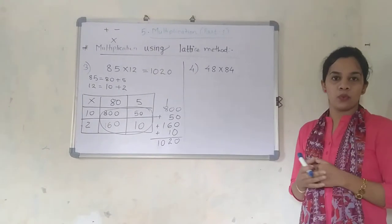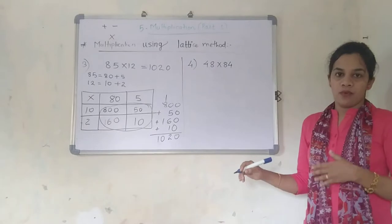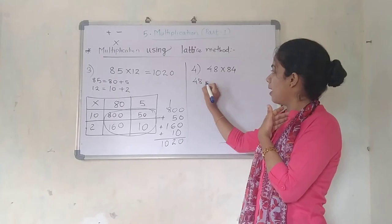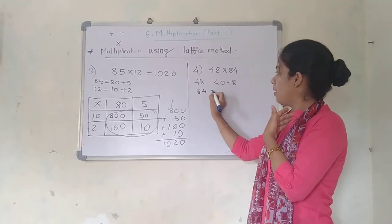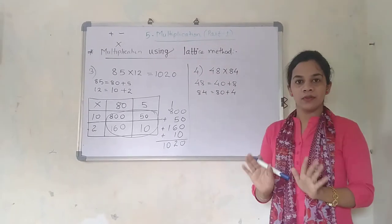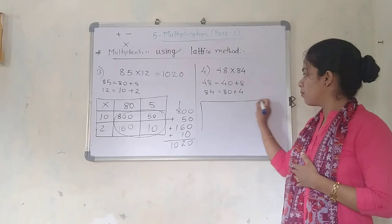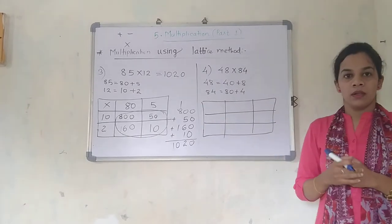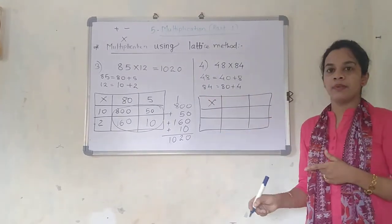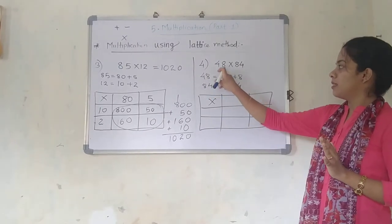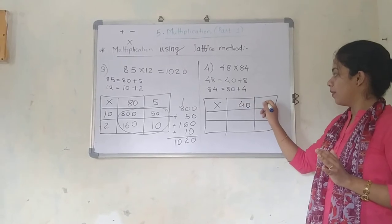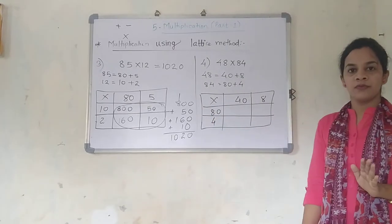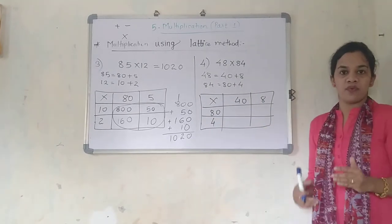Now focus on the next question: 48 into 84. I am going to write 48 and 84 in expanded form. 48 can be written as 40 plus 8, and 84 can be written as 80 plus 4. Now just proceed further — we are going to draw the box. So multiplication will be here; don't forget to write this multiplication, it is very important. 40 over here, 8 over here, 80 here, and 4 here. All the places are filled; now we are supposed to find out the remaining calculations.